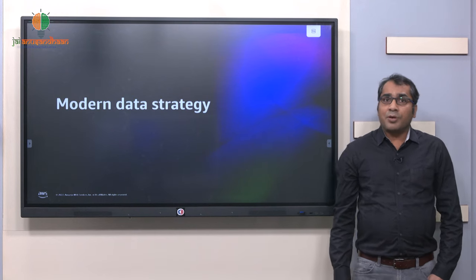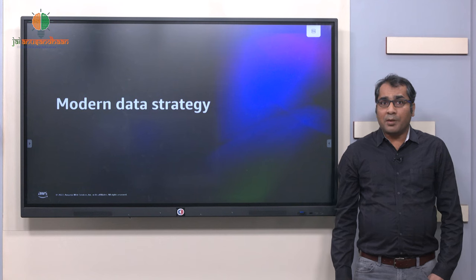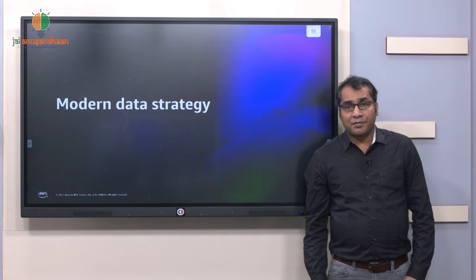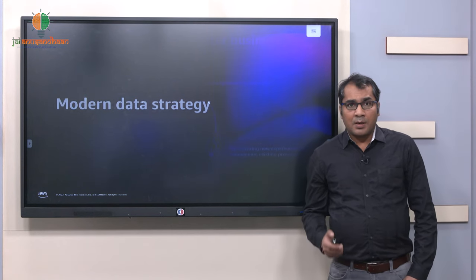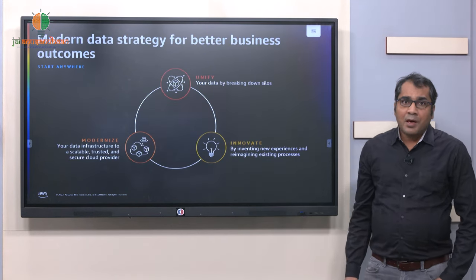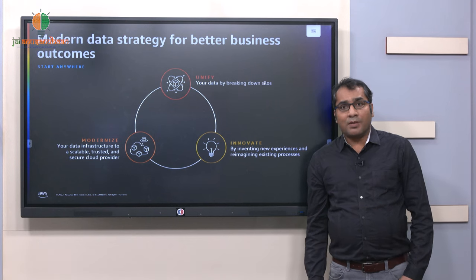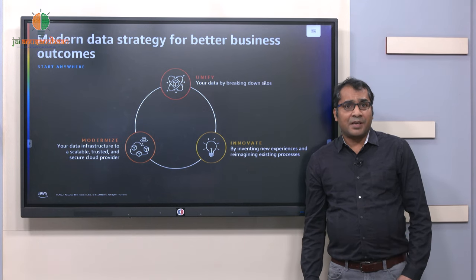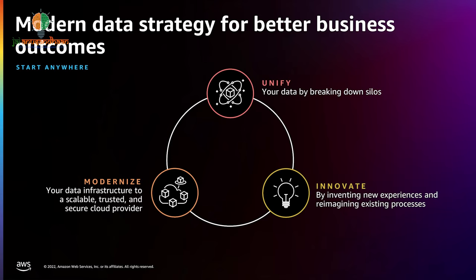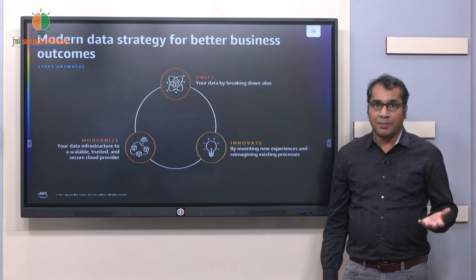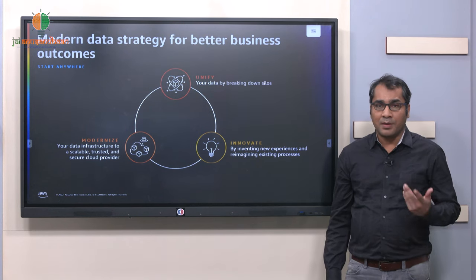Now we are going to discuss a bit about modern data strategy. When we speak about modern data strategy in AWS, we generally say that it is based on three pillars: Modernize, Unify, and Innovate. We will go through these pillars one by one.